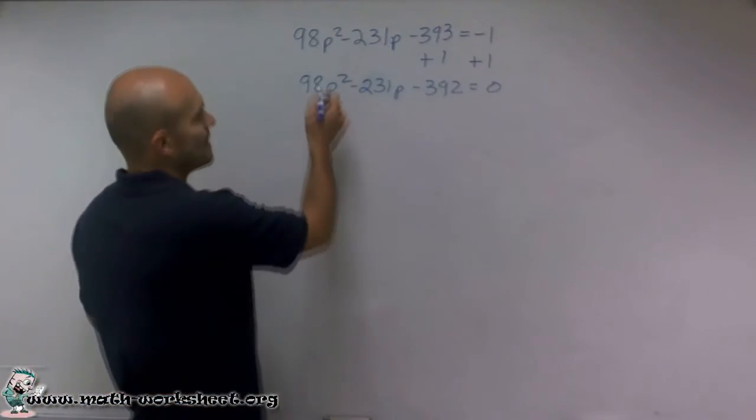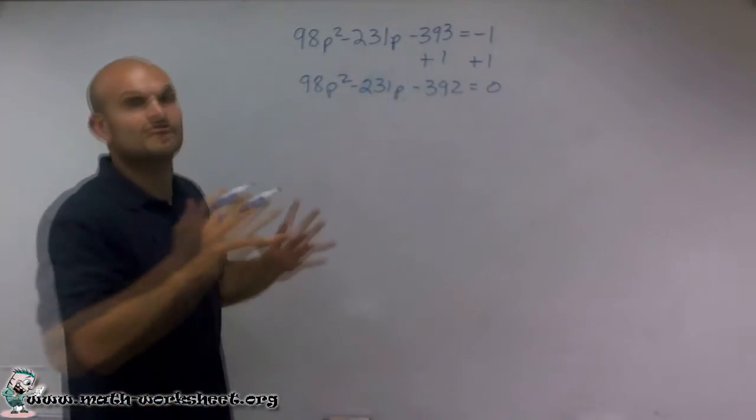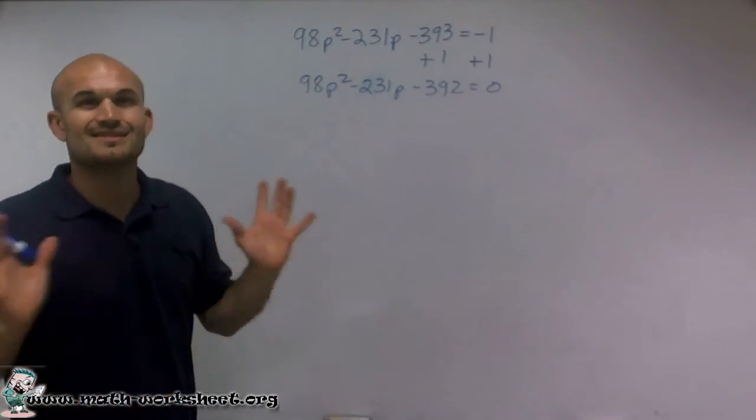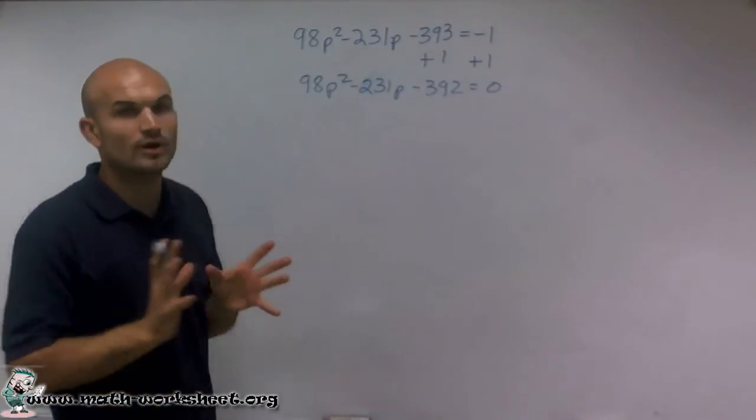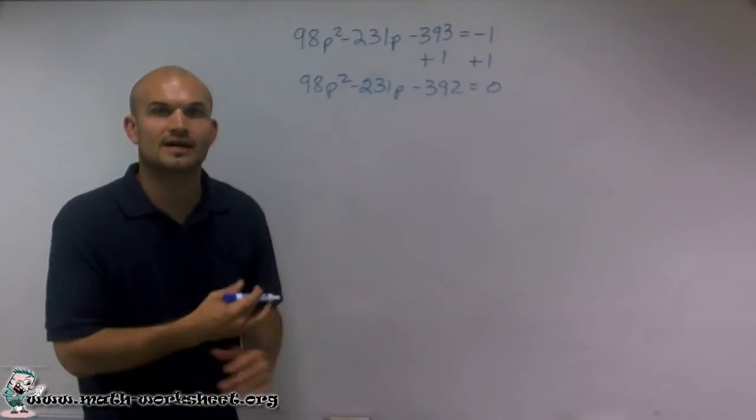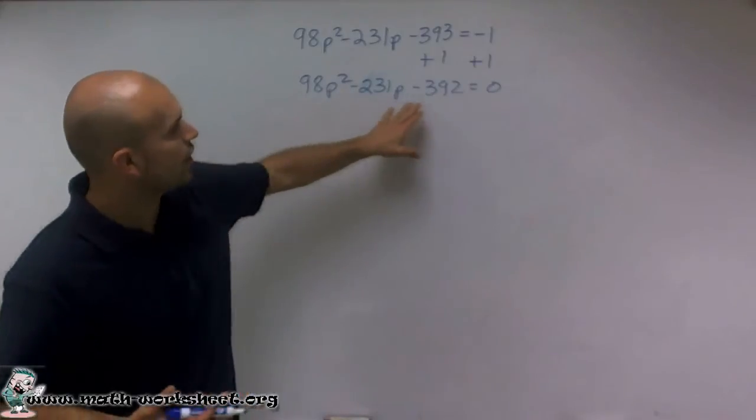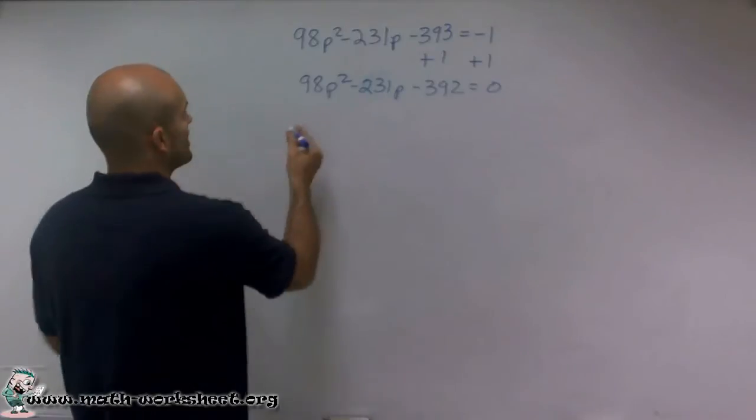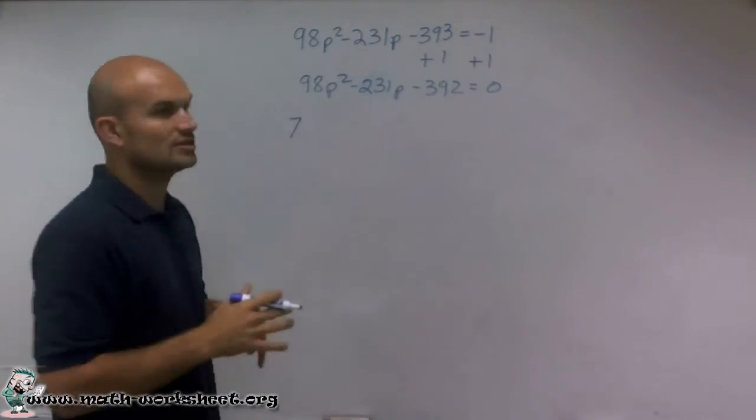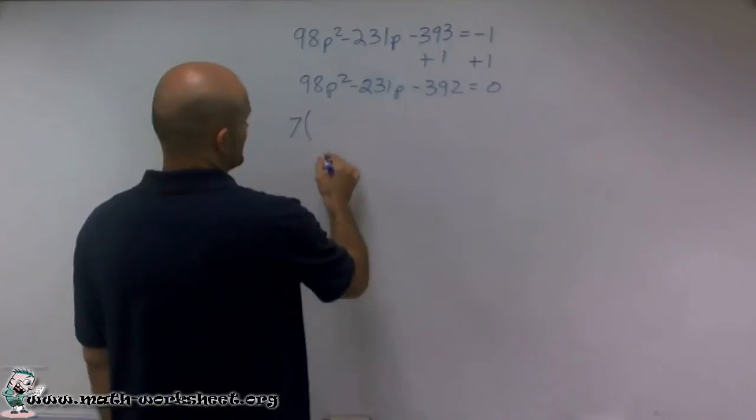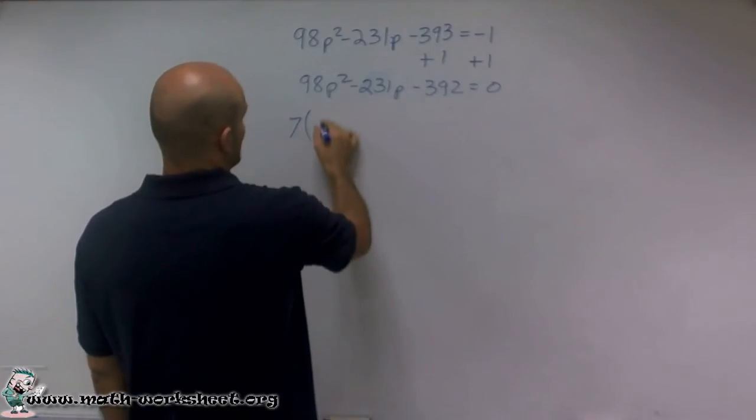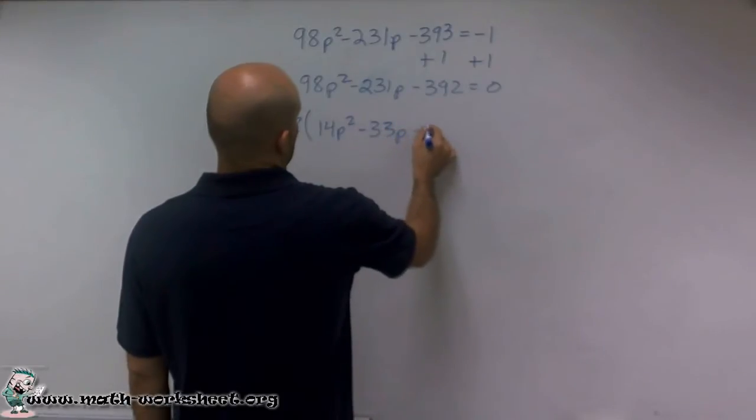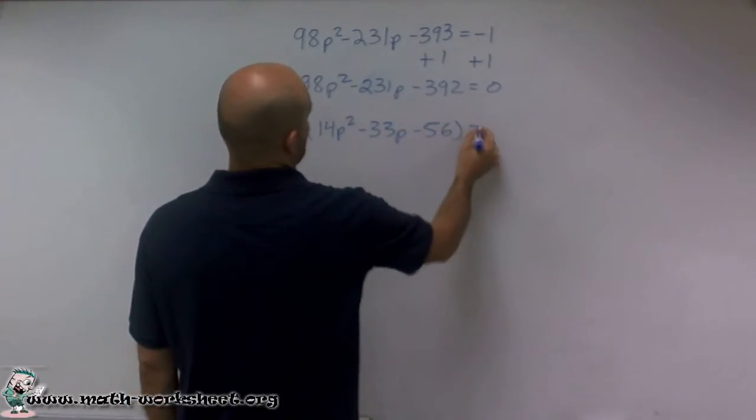Now before we even start factoring, I don't even want to try multiplying these numbers and figuring out what multiplies to give me those two numbers. That's just getting way too much. What I can do is see what do they have in common. And so I took a look at this and I said all of these three terms all have in common a 7. So now the next thing you're going to do is factor out a 7. When I factor out a 7, I'm left with 14p² - 33p - 56 equals zero.